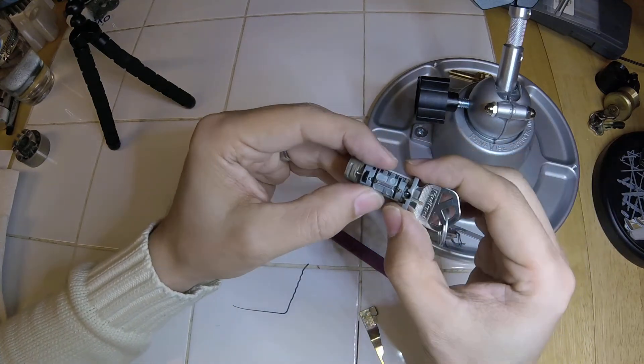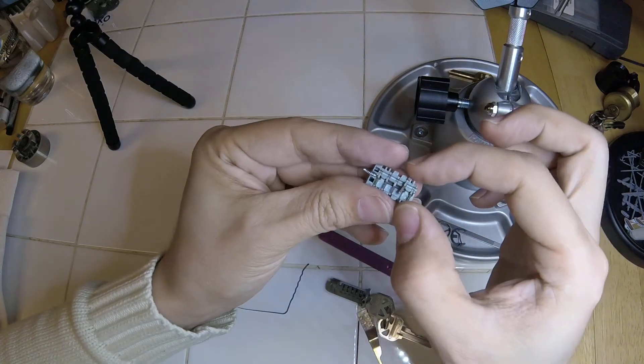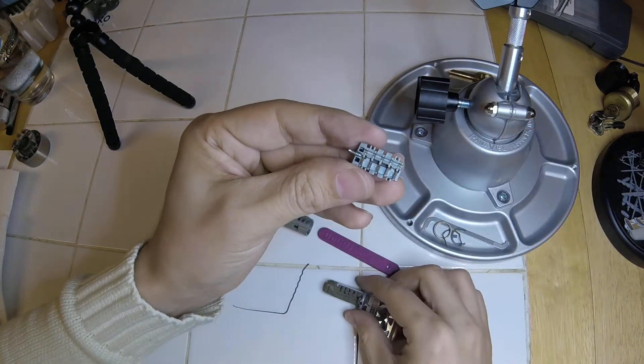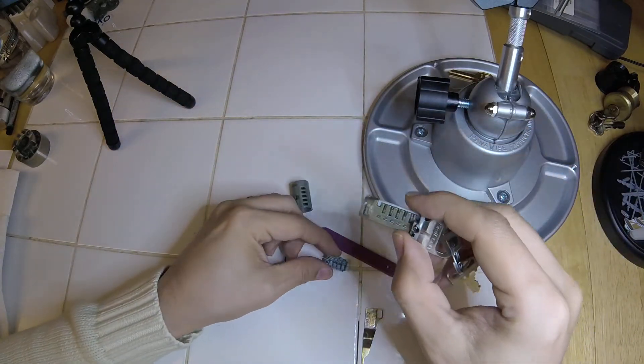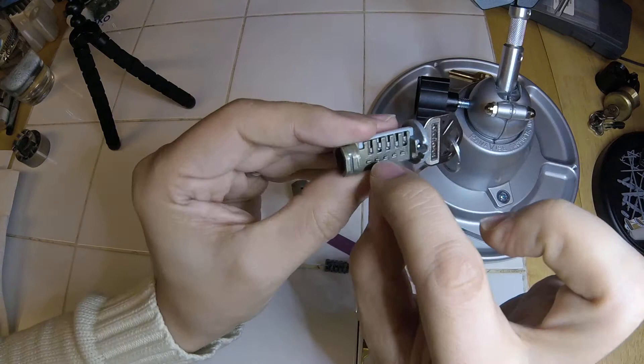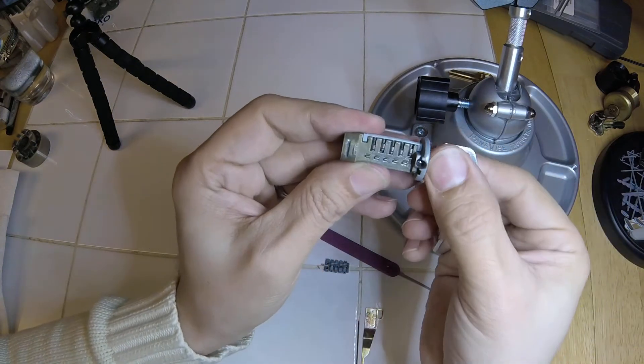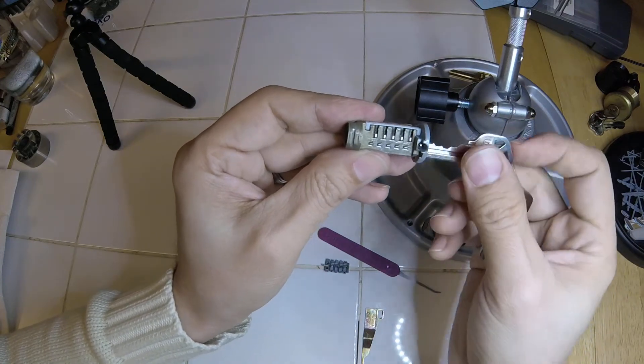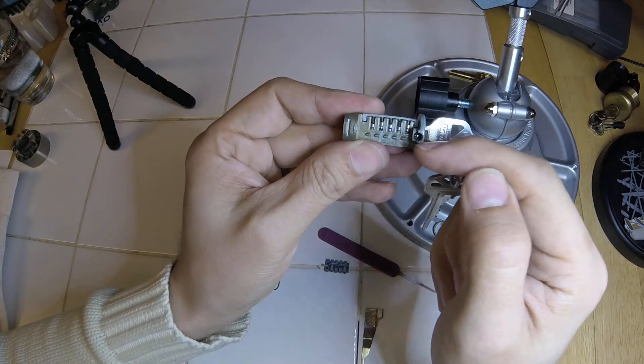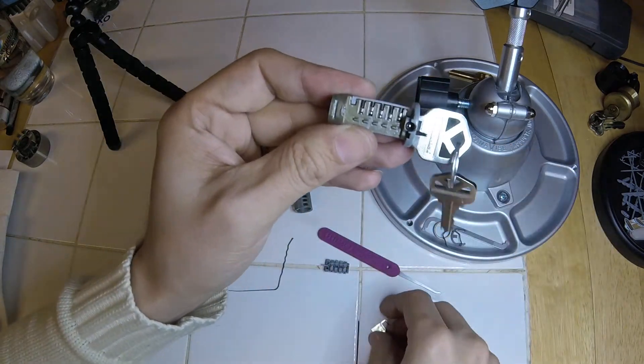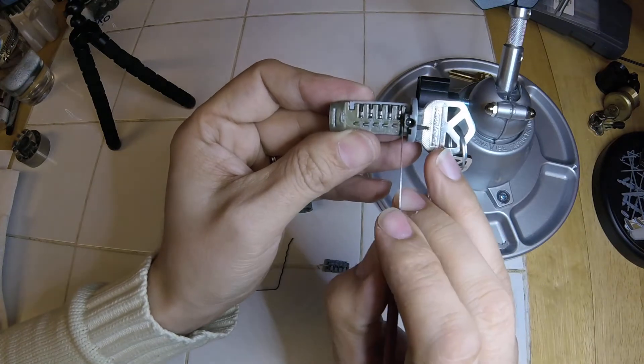What that's gonna do is if we take this out, little things fell out, it's gonna push these all over to the side. So they're no longer gonna line up with the little fingers from these pins. Each of these pins has a little finger on it, and that's what the key is pushing into place. But when you put the reset tool in, it pushes the whole thing over so they're no longer lined up with these fingers.